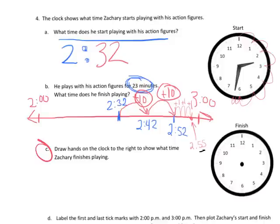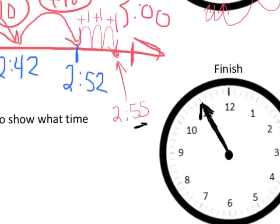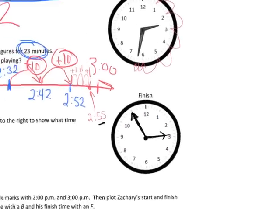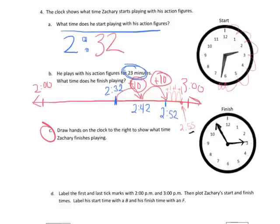We know the time is 2:55, so the minute hand is going to point at the 11. Our hour hand is going to be somewhere between the 2 and the 3, but it's going to be a lot closer to the 3 because 2:55 means we're practically at 3 o'clock. So I'm going to draw an hour hand kind of close to the 3 but not quite to the 3 — and that's my hour hand for the analog clock for question C.